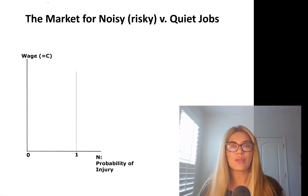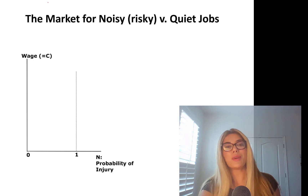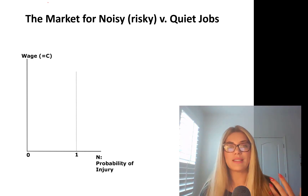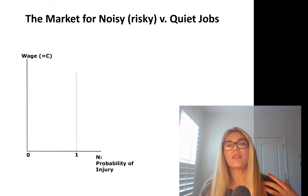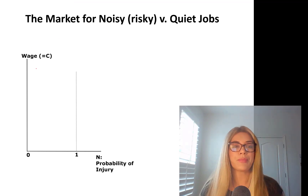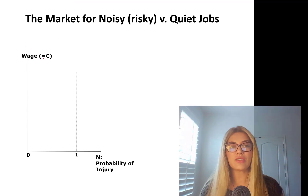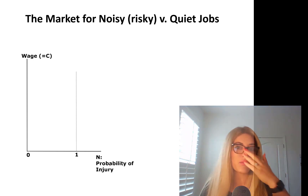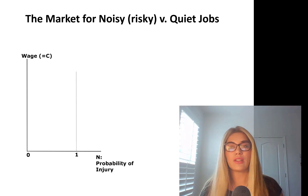So let's talk about this market for noisy or risky jobs — it could be risk, probability of injury — versus quiet jobs. We have wages on the y-axis, which equals what you consume (we're going to assume), and on the x-axis we have probability of injury, or the magnitude of the noise at a job, or risk of injury.